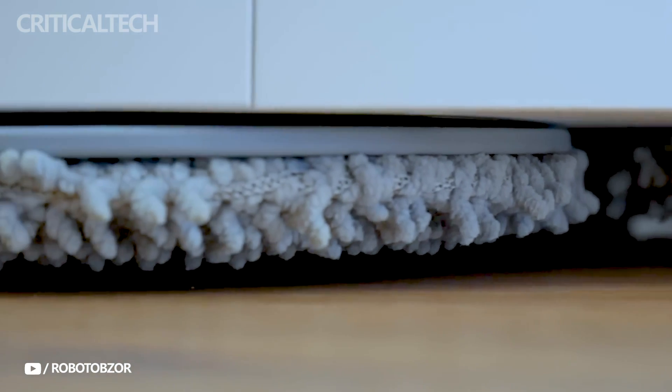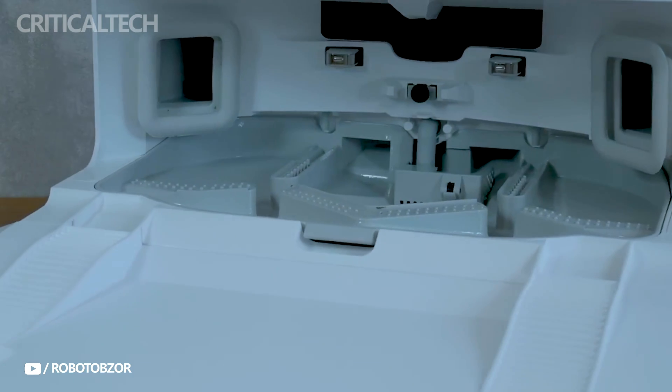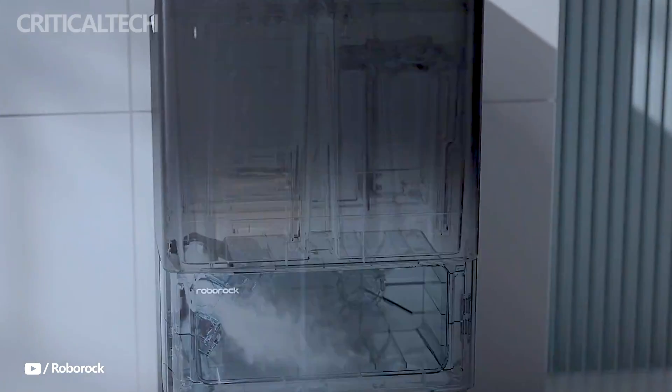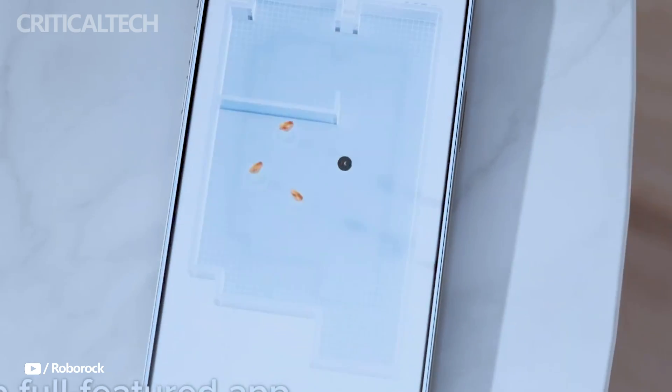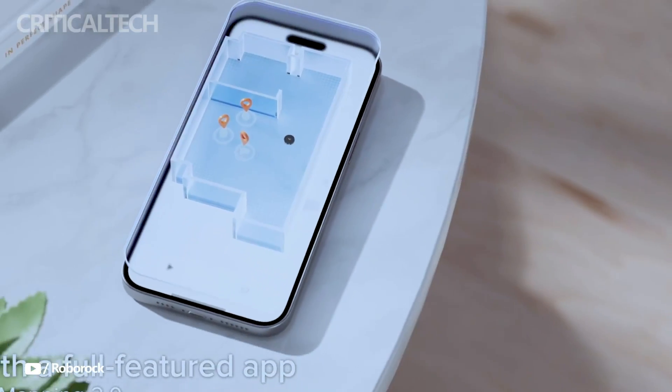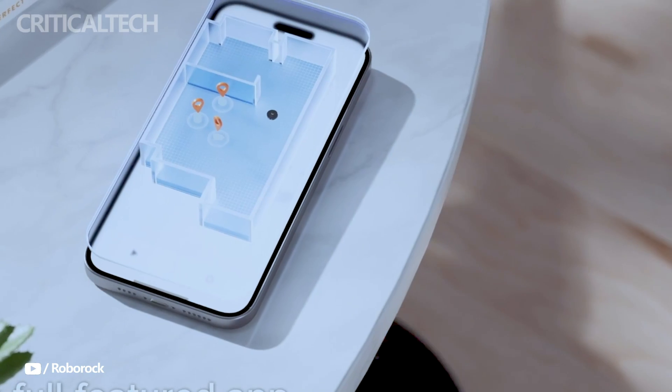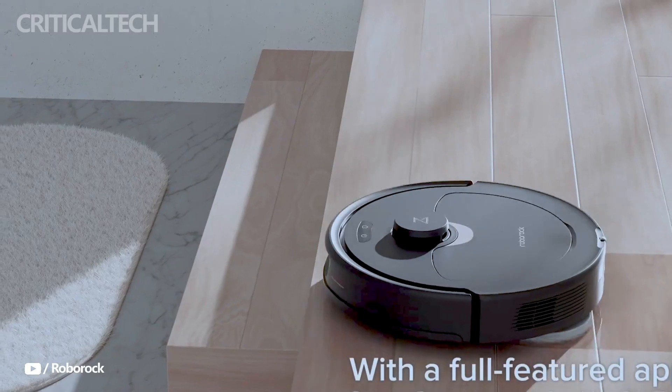One of the standout aspects of the Q-Revo-S is its capability for extended hands-free operation, delivering up to seven weeks of autonomous cleaning. This feature makes it a convenient choice for users looking to minimize their involvement in daily cleaning tasks while maintaining a high level of cleanliness in their homes.